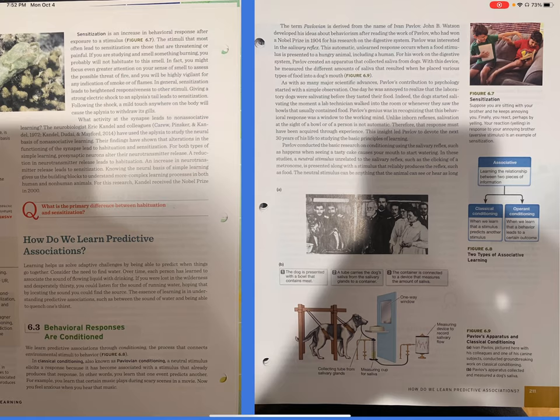The term Pavlovian is derived from the name of Ivan Pavlov. John B. Watson developed his ideas about behaviorism after reading the work of Pavlov, who had won a Nobel Prize in 1904 for his research on the digestive system. Pavlov was interested in the salivary reflex. This automatic, unlearned response occurs when a food stimulus is presented to a hungry animal, including a human. For his work on the digestive system, Pavlov created an apparatus that collected saliva from dogs. With this device, he measured the different amounts of saliva that resulted when he placed various types of food into a dog's mouth, Figure 6.9.